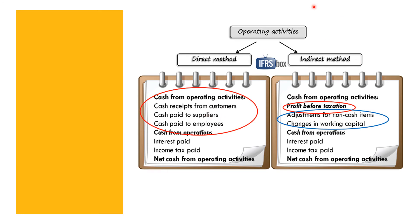In this subject — Conceptual Framework and Accounting Standards — we will only discuss the theory. The computation of the statement of cash flows will be covered when you reach higher accounting, specifically Intermediate Accounting 2 or 3. For now, let's be familiar with the format of the direct method and the indirect method.